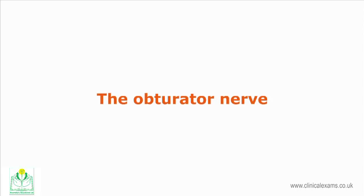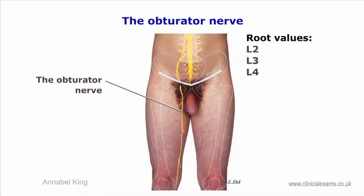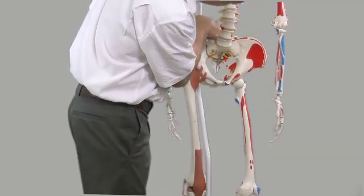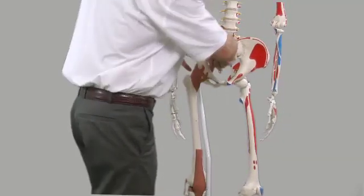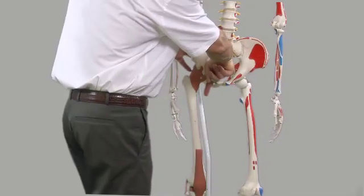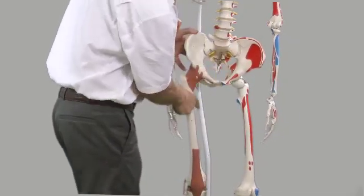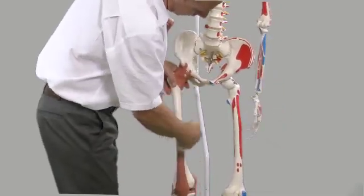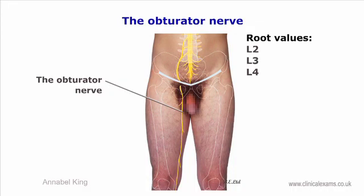The obturator nerve, like the femoral nerve, arises from L2, L3, and L4. It descends the medial aspect of the psoas muscle and emerges near the brim of the pelvis, then through the upper part of the obturator foramen. Here it enters the thigh through the obturator foramen, supplying the adductor muscles of the thigh and the overlying skin.